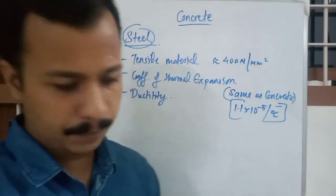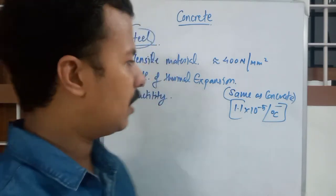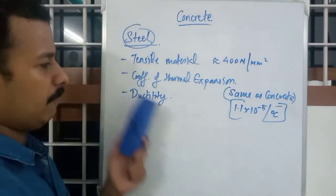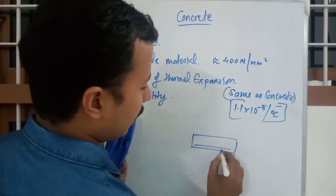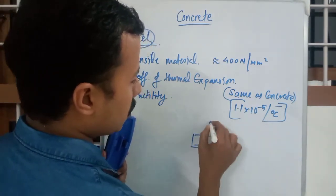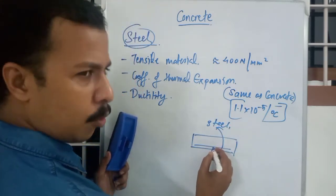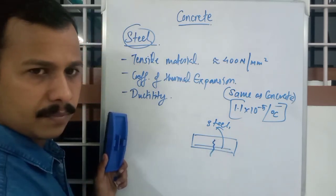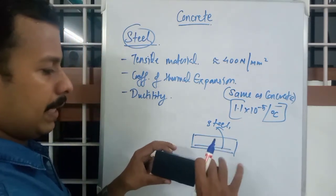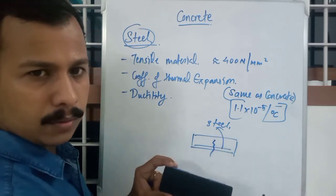And one more thing: if ductility is less, this beam will be failing much faster. If this is a beam and this is steel reinforcement, if there is no ductility, it will break suddenly. There won't be any elongation. They will just break like a chalk.